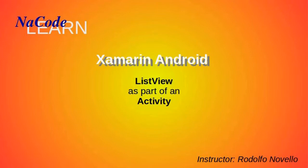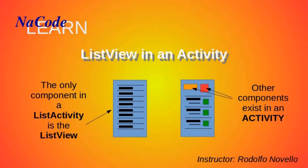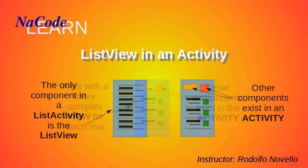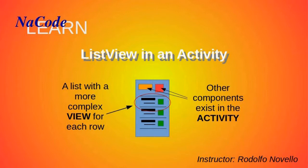In a previous video we learned how to create a list activity which is comprised of only a list view. One of the main differences between an activity and a list activity is that a list activity is only a list view container, whereas an activity can contain a list view alongside any other components. In this video we will learn how to create a more robust list for your business objects where each row will not be limited to one row of text, but a more complex entity with several rows and other view components like an image.